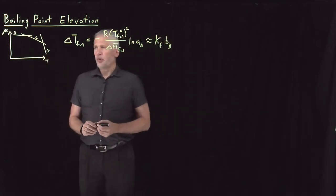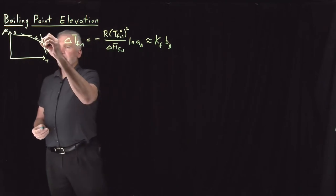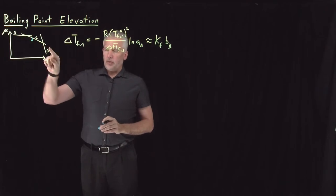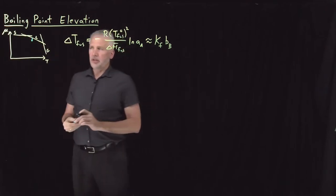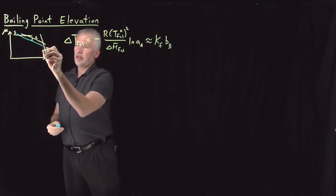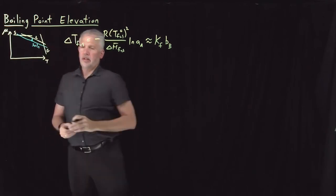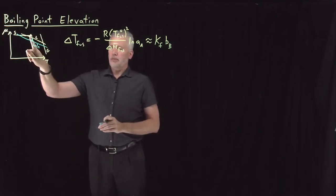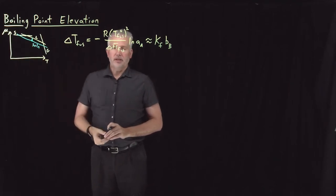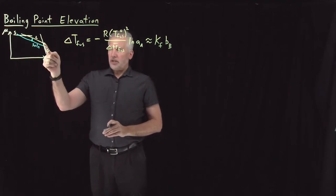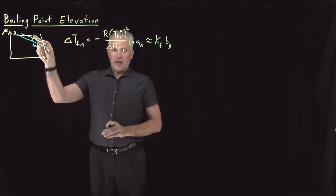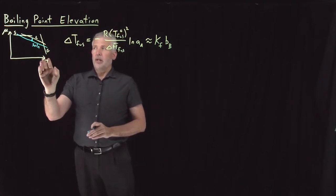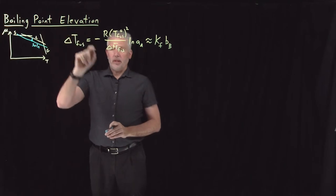From a qualitative point of view, the reason we have a freezing point depression is if we plot the chemical potential of a solid, liquid, or gas versus temperature, they look like this. In a solution, the chemical potential is lowered. The lower chemical potential in a solution compared to the liquid means that the freezing point got shifted to a lower temperature — the freezing point got depressed. Likewise, for exactly the same reason, the chemical potential of the liquid got lowered, so that shifts the boiling point of the solution to a higher temperature. While we have freezing point depression, we end up with boiling point elevation.